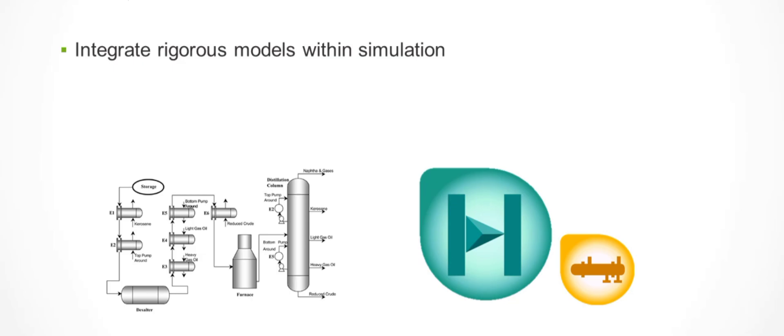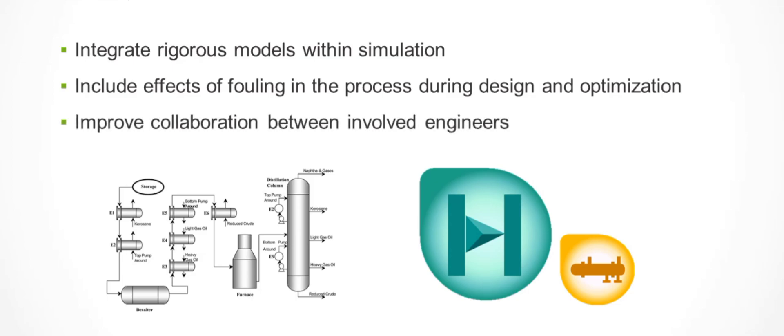The ideal heat transfer coefficients are not always realized. Exchangers get fouled over time and need to be cleaned. Being able to rigorously monitor each exchanger in the network and see the impact of fouling on the overall effectiveness of the preheat train is a valuable addition to the model.